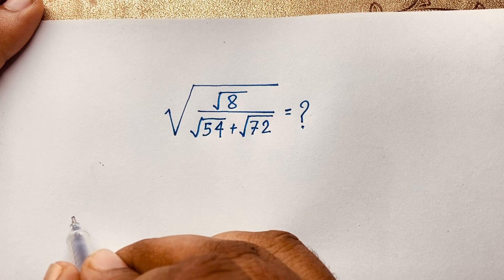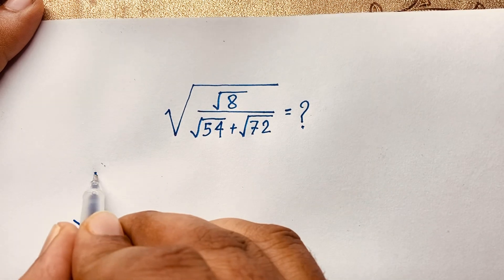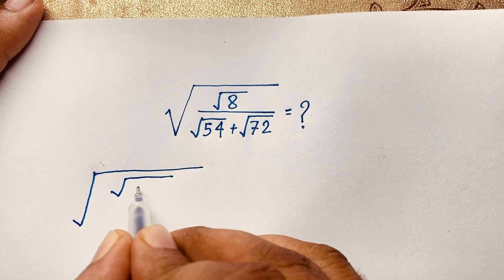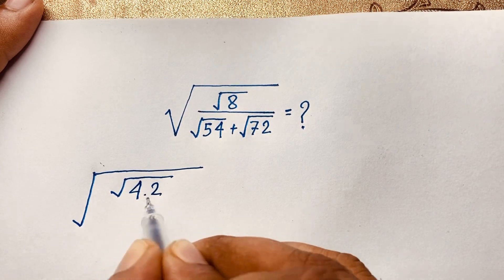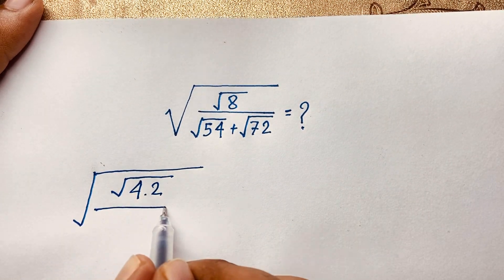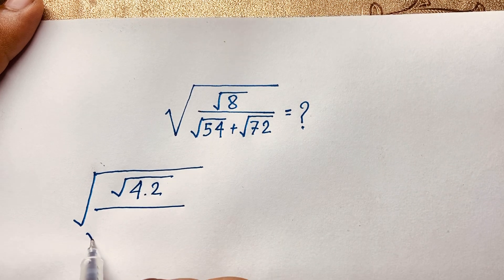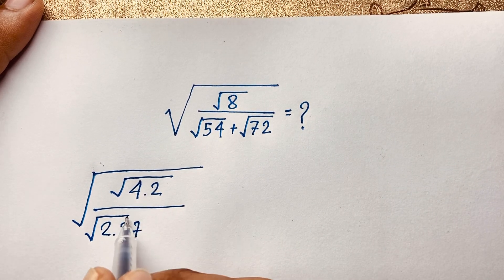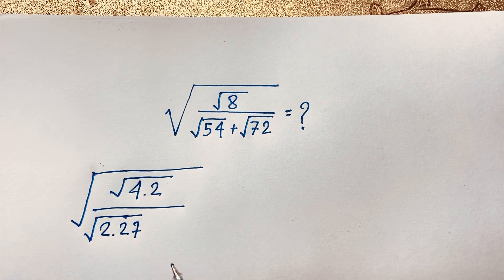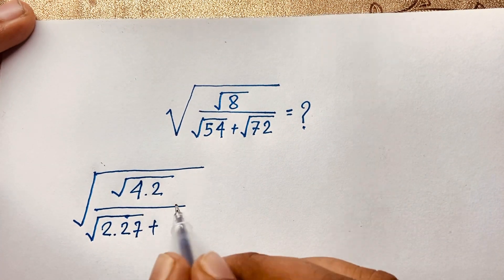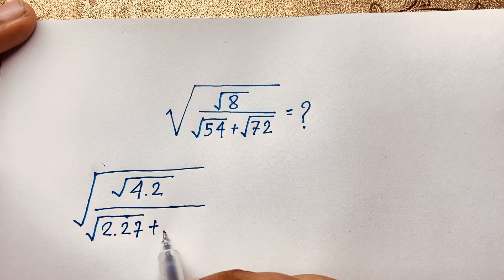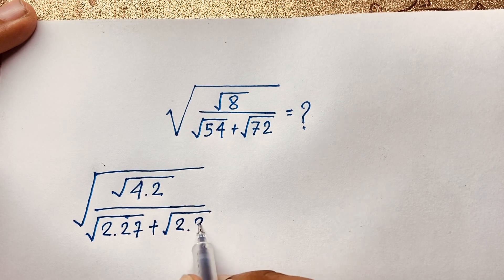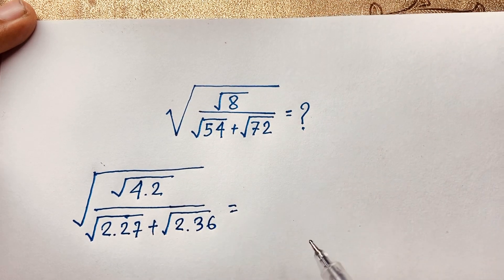First of all, square root 8 can be written as square root of 4 times 2. Square root 54 will be square root of 2 times 27, since 2 times 27 equals 54. Plus square root 72, which will be square root of 2 times 36.